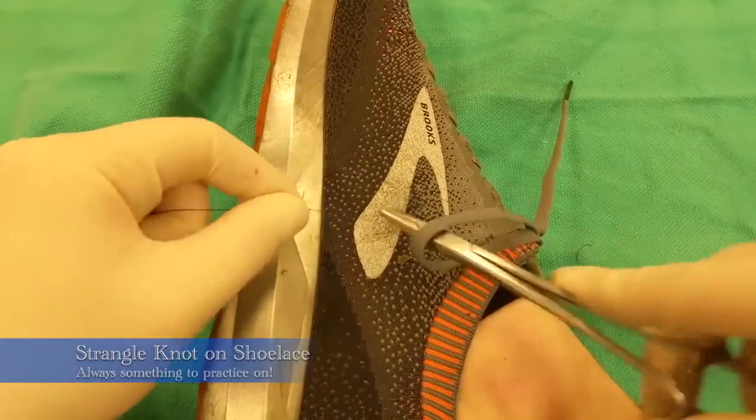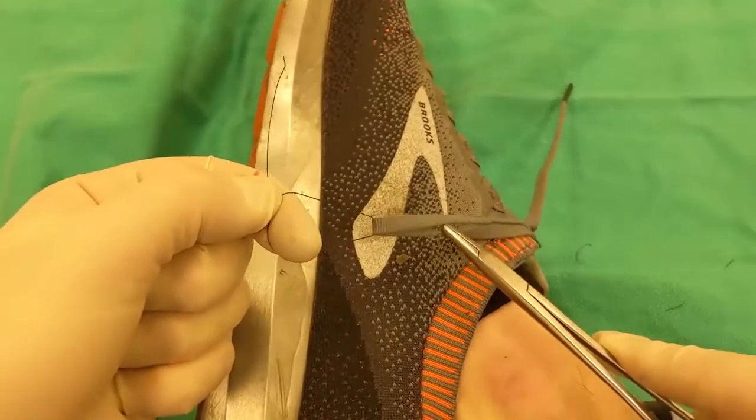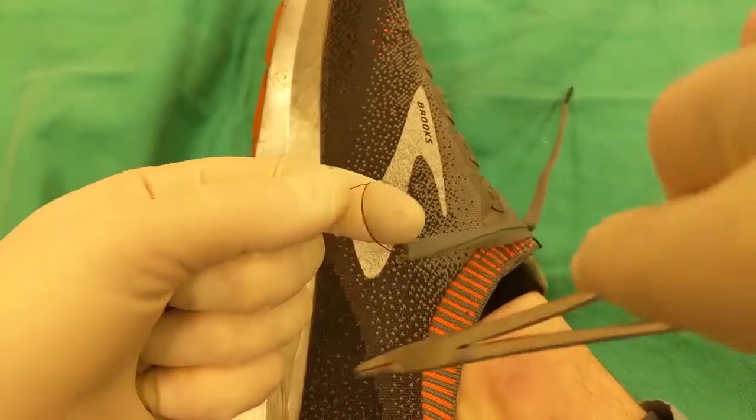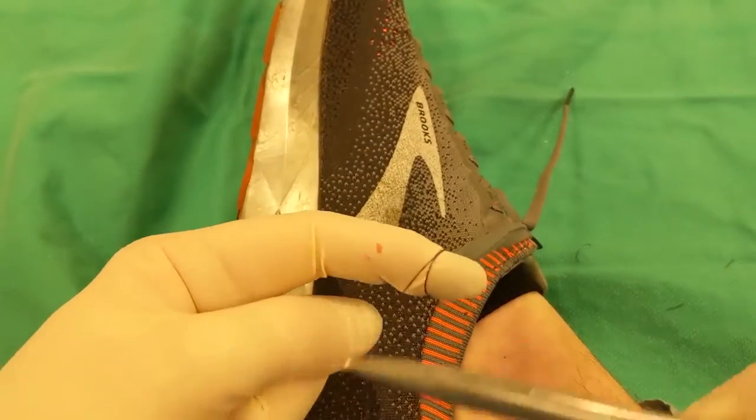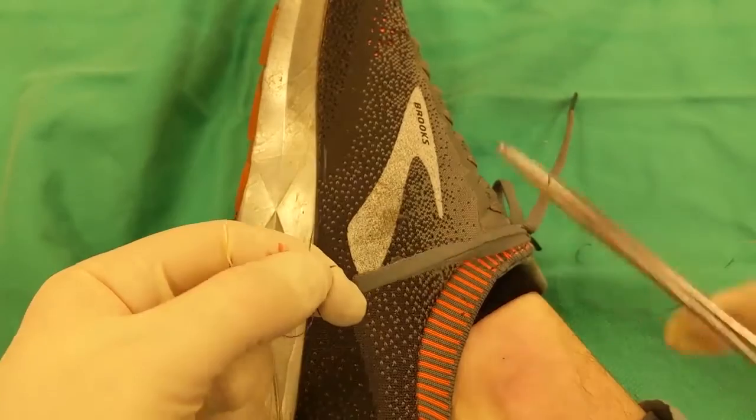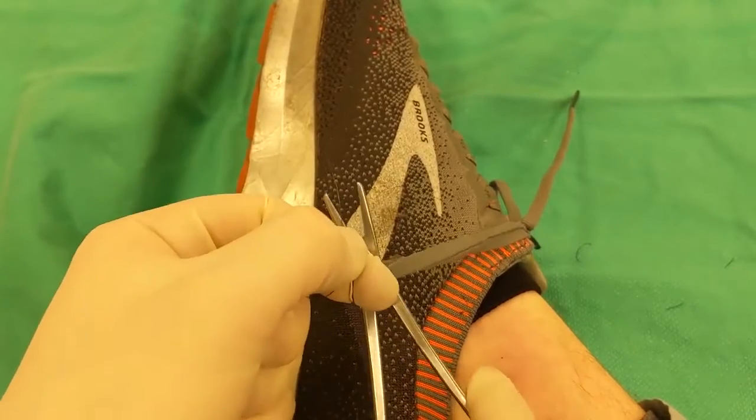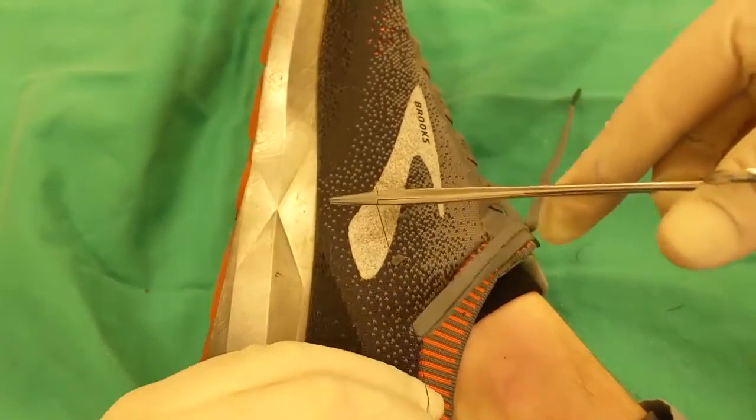So here we are doing our strangle on a shoe lace. You always have your shoe on you to practice. So we're crossing, make our X, and then come through both of our loops, pull that tag through, and tie our strangle.